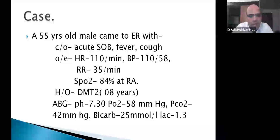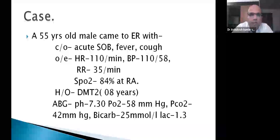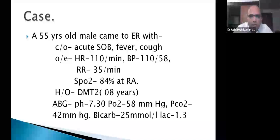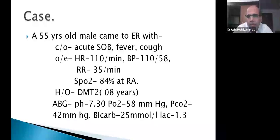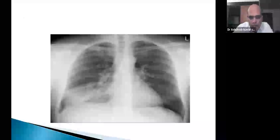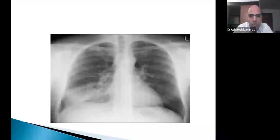I will start my discussion from a simple case. A 55-year-old male came to the emergency room with a complaint of acute shortness of breathing, fever, and cough. On examination, heart rate was 110 per minute, BP 110/58, respiratory rate tachypneic, and saturation 84% at room air. Past history: diabetic for eight years. ABG showed PO2 of 58, PCO2 of 42, bicarbonate 28, and lactate 1.3. Chest X-ray showed right lower lobe consolidation.